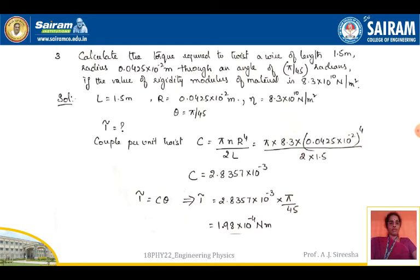This formula is derived from the torsion of a cylinder. Substituting the given values of N, R, and L, we get C = 2.8357 × 10⁻³. Then τ = C·θ = C × π/45. Doing the calculations gives τ = 1.98 × 10⁻⁴ Newton meter. This is the solution for the torque in this numerical problem.